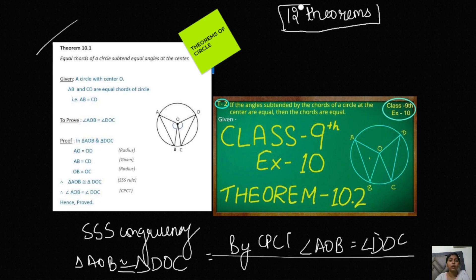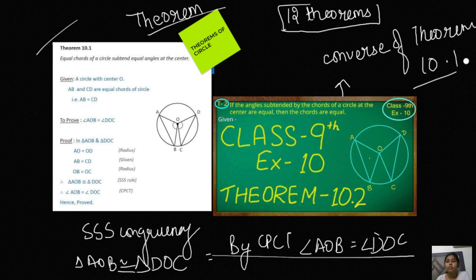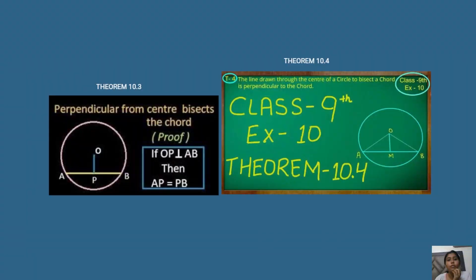Theorem 10.2 is the converse of Theorem 10.1. If the angles subtended are equal — that is, angle AOB = angle DOC is given — we have to prove that AB = CD. This is simply the converse of Theorem 10.1.